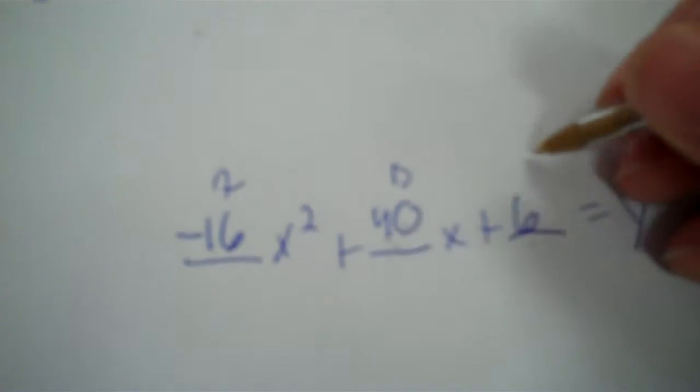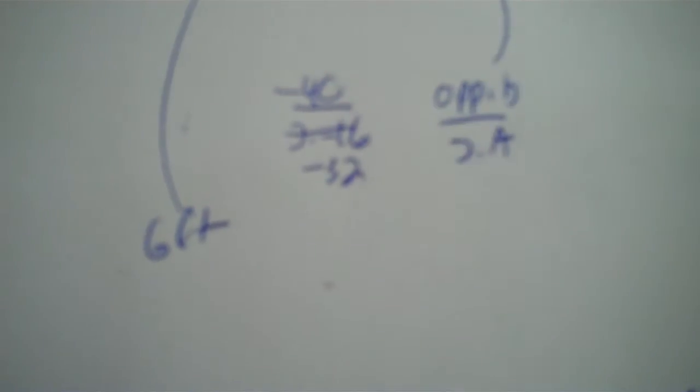So finding the X, we apply opposite of B, which should be negative 40, divided by two times A. So it'd be two times negative 16, which is negative 32. Then you divide negative 40 by negative 32 and you get 1.25.